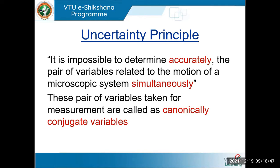Therefore, position and momentum form one canonically conjugate pair. If Δx is the uncertainty in finding the position of the particle, and Δp is the uncertainty in finding the momentum, then the product Δx · Δp must be greater than or equal to h/4π.